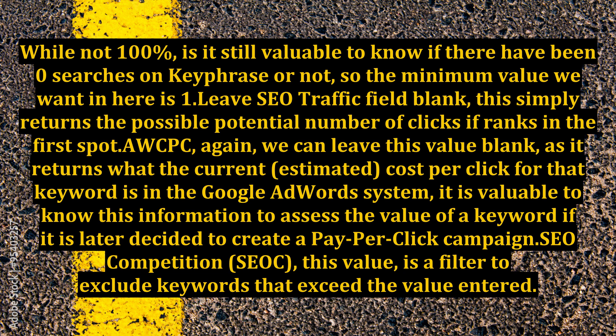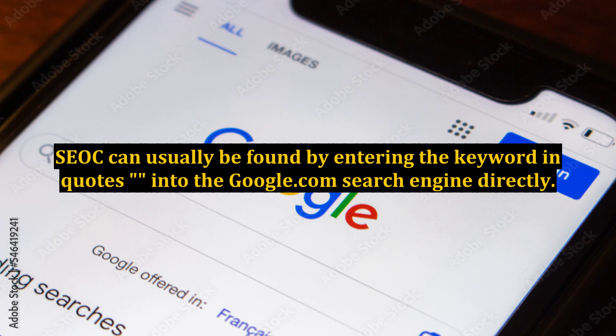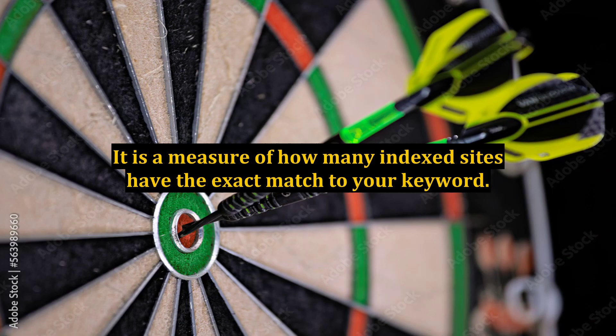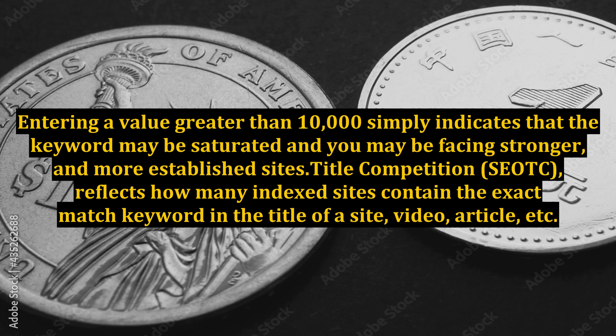SEO Competition (SEOC) is a filter to exclude keywords that exceed the value entered. In other words, if we want to exclude keywords that have an SEOC of greater than 10,000, then we enter that as the max value — all keywords with SEOC exceeding 10,000 would then be removed. SEOC can usually be found by entering the keyword in quotes into Google search directly. It is a measure of how many indexed sites have the exact match to your keyword. The higher the value, the harder it is to compete. A value greater than 10,000 indicates the keyword may be saturated and you may be facing stronger and more established sites.